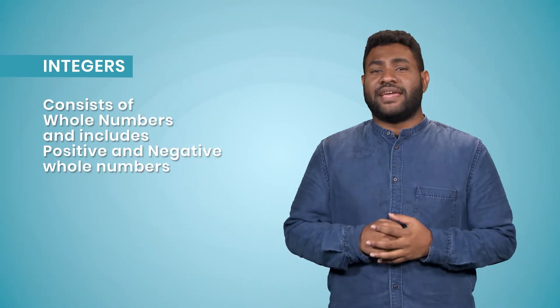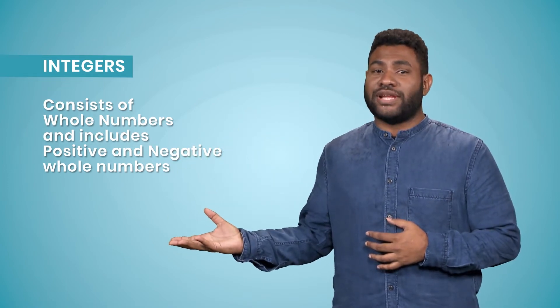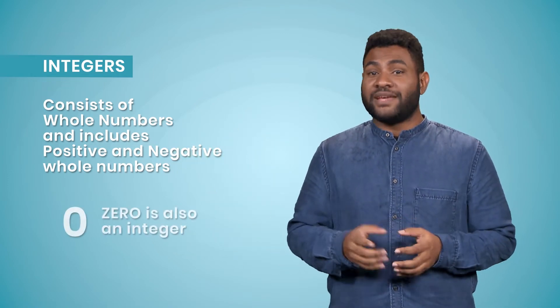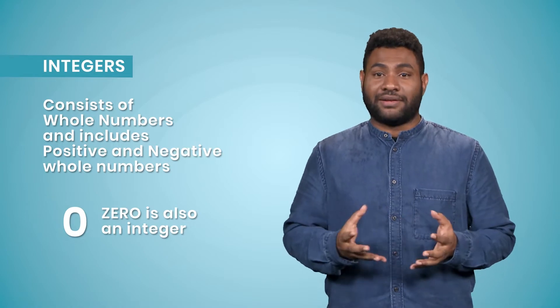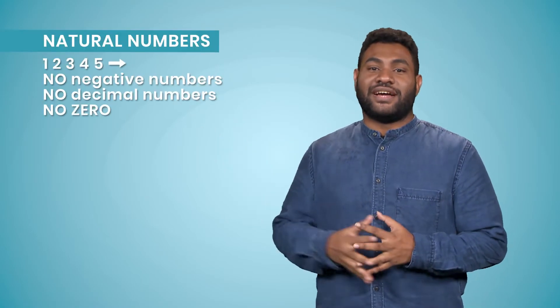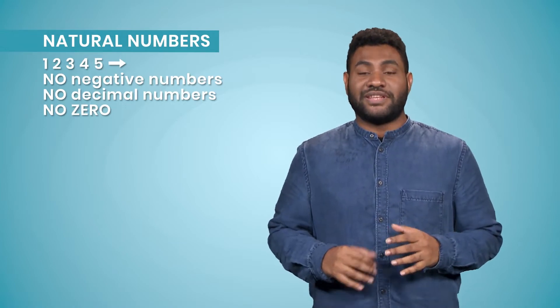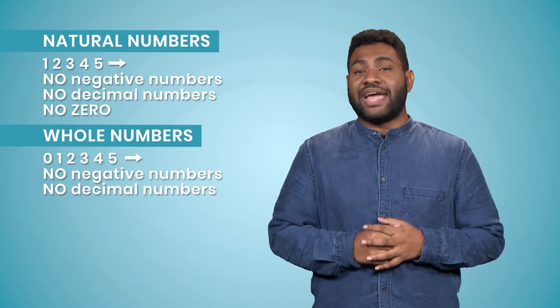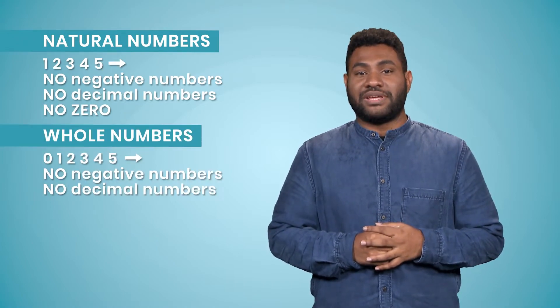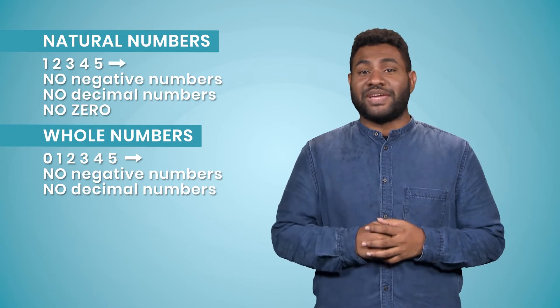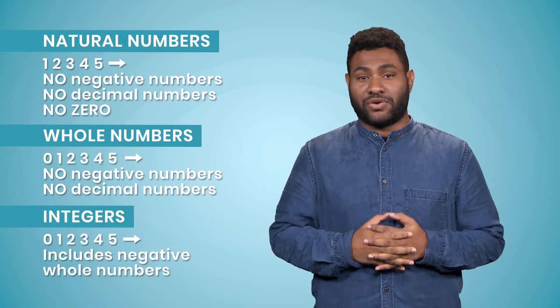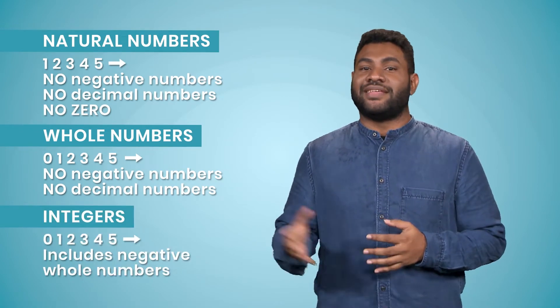Integers consist of whole numbers, but they include both positive and negative whole numbers. Remember, zero is also a part of this group. To summarize the three groups so far: natural numbers are the counting numbers starting from one — they do not have zero, negative numbers, or decimals. If we add zero to the natural number group, it becomes the whole number group. And if we add negative whole numbers to the whole number group, we get the integers group.